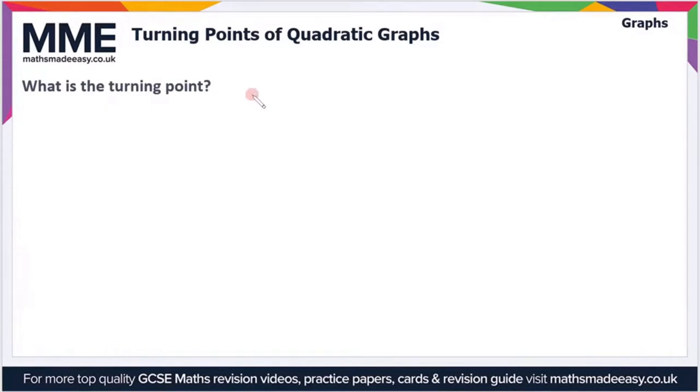We can have a graph that's either this shape or this shape, and the turning point will either be the minimum in this case or the maximum point in this case on the graph.